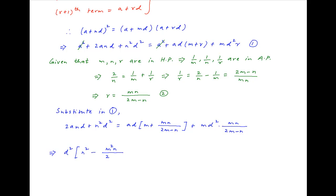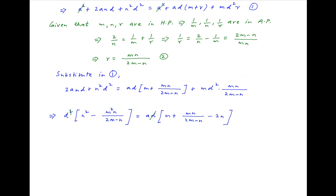This can be rewritten as d squared times [n squared minus m squared n divided by (2m minus n)] equal to and times [m plus mn divided by (2m minus n) minus 2n]. Then d cancels on both the left-hand side and the right-hand side.